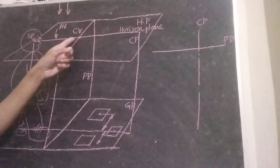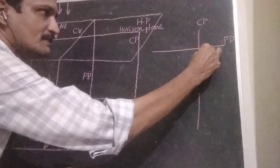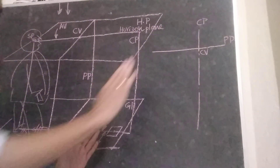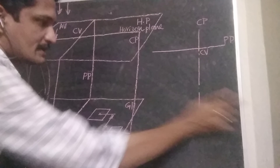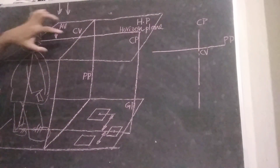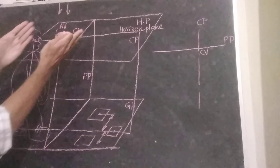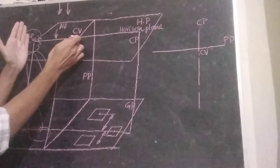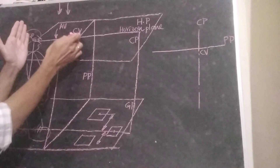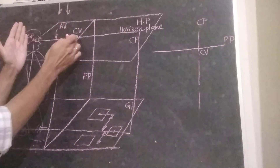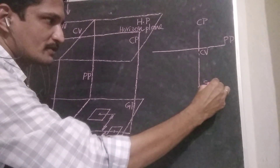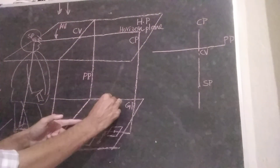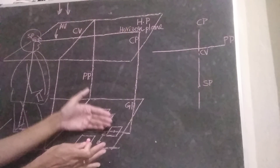This is the axis of vision. Then this point will become CV. We represent the object's top view. The top view of the object is marked. This is the top view of the station point. The top view of the station point relates to the top view of the object.